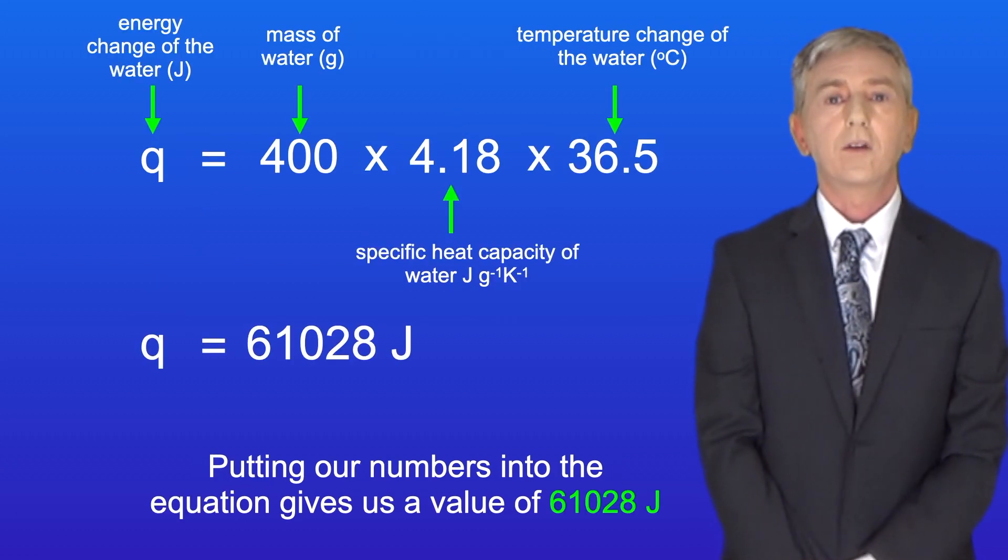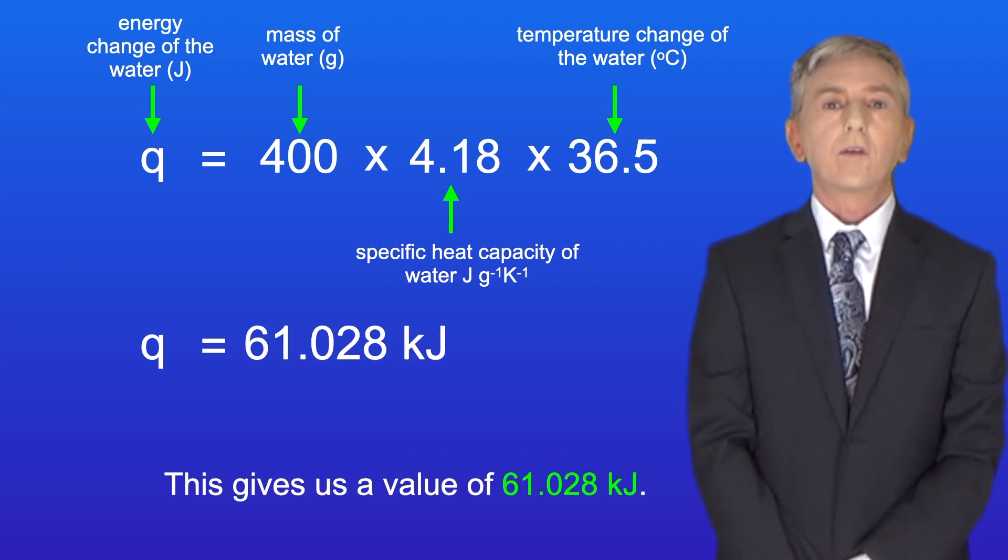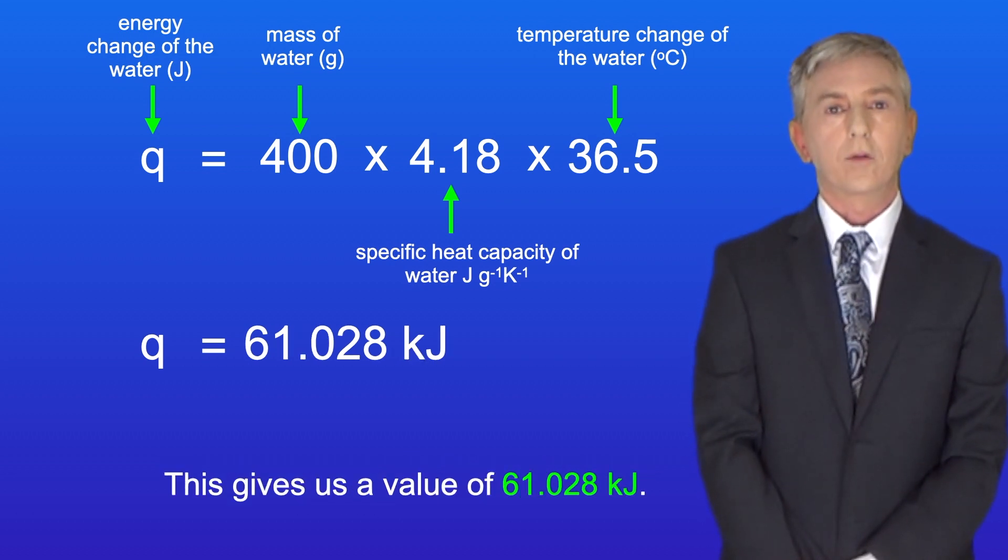Putting our numbers into the equation gives us a value of 61,028 joules. We can convert this to kilojoules by dividing by 1000. And this gives us a value of 61.028 kilojoules.